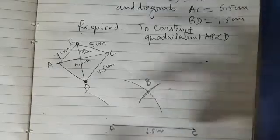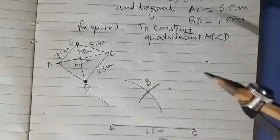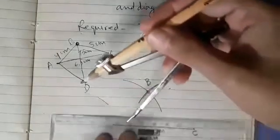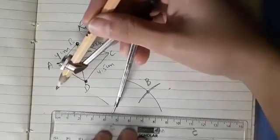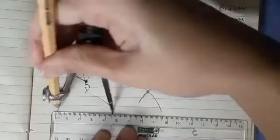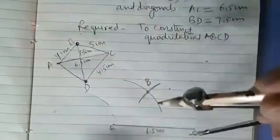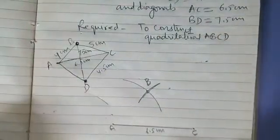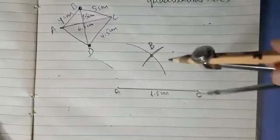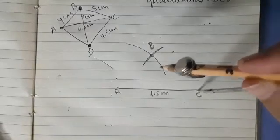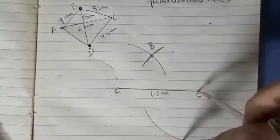After that we have to get the point D. Then with C as center and radius 4.5 cm. So this point D is 4.5 cm. With C as center and radius 4.5 cm we are going to cut an arc below AC.